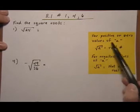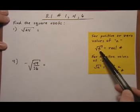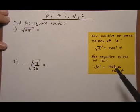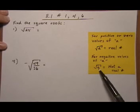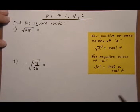If we have a positive or zero value inside the root for A, we will get a real number answer. If we have a negative value inside the root, we will not get a real number.